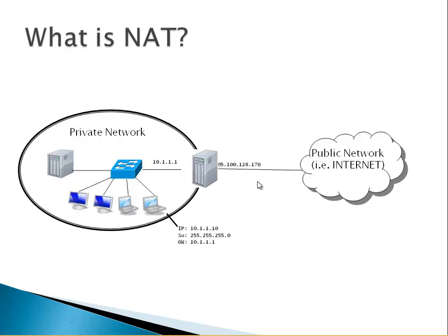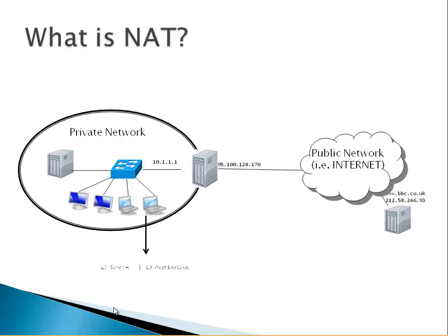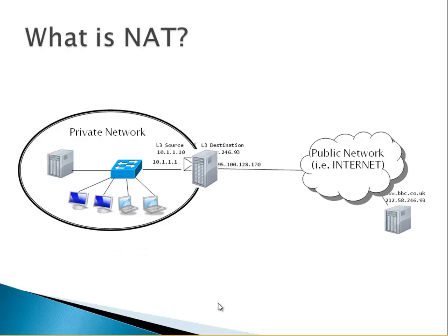The server's public IP address is 95.100.128.170. When this client machine wants to communicate with a server on the public network — in this case www.bbc.co.uk at address 212.58.246.93 — the client will create a Layer 3 packet with a Layer 3 source of 10.1.1.10 and a Layer 3 destination of the BBC's IP address. The packet is sent to the gateway, which will perform Network Address Translation because the source is a private IP address.